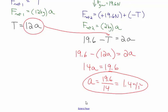The acceleration of each of the blocks is 1.4 meters per second squared. Mass one accelerates to the right at 1.4 m/s², and mass two accelerates down at 1.4 m/s². To calculate the tension in the chord, I substitute that acceleration back in: T equals 12 kilograms times 1.4 meters per second squared, giving a tension of 16.8 Newtons.